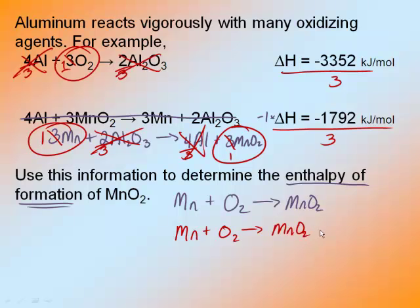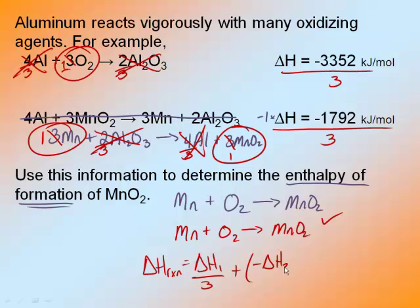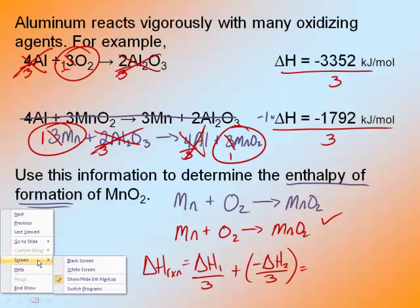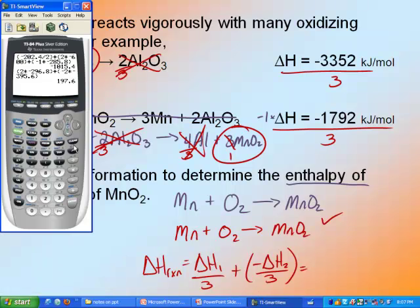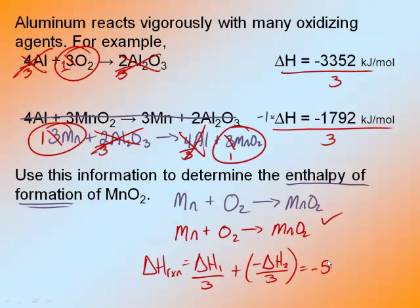My delta H of my reaction equals the delta H of reaction 1 divided by three, plus the opposite sign of delta H of reaction 2 divided by three. Plugging into the calculator: (−3352 ÷ 3) + (−1792 ÷ −3) = −520 kilojoules per mole. So these examples have been fairly simple applications of Hess's Law.